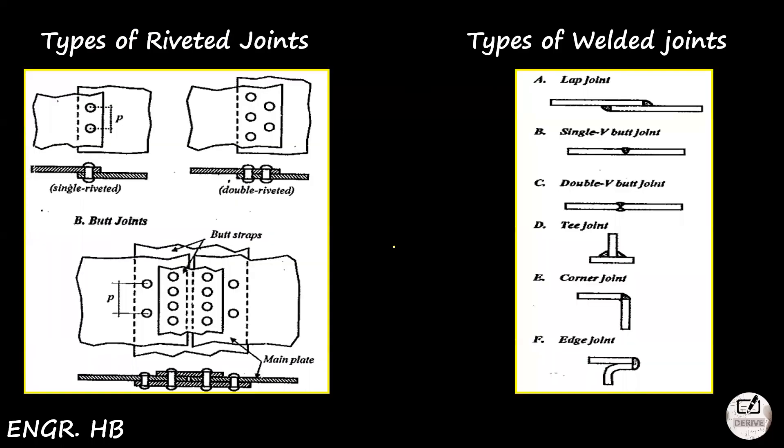We have these welded joints: the lap joint, single V butt joint, butt joint. We have T joint, corner joint, and edge joint. The most commonly used in problems is the butt joint and the fillet weld. Fillet weld is somehow similar to T joint and corner joint. It looks like this: we have two plates and this is the weld. This fillet weld will be discussed on the next slide.